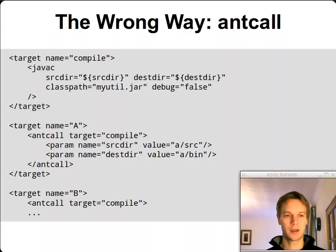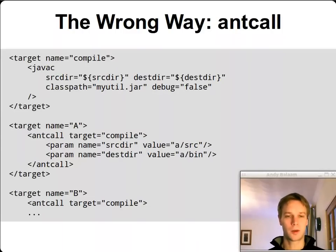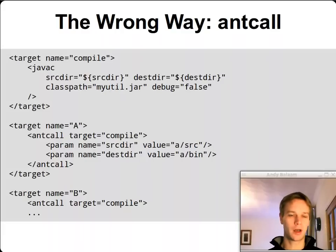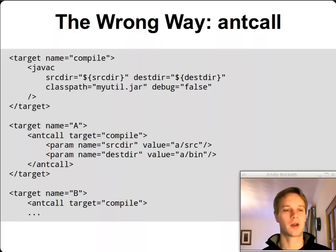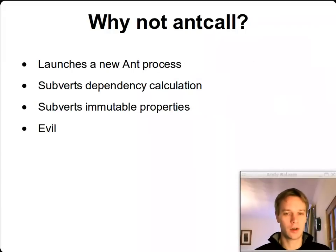Once we're inside that compile target, we need those properties set, and the way we do that is in target A: instead of having javac directly in target A, we call antcall and say our target is compile, and we provide the parameters — which is how those properties get set. This works. It runs Ant again, the target it runs is the compile target, and while that mini Ant is running, you've set the source dir and dest dir properties to what you want. Target B looks the same with different parameter values.